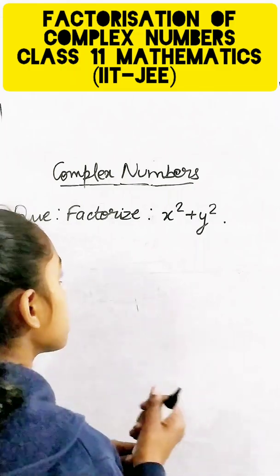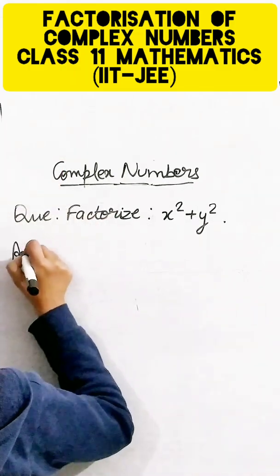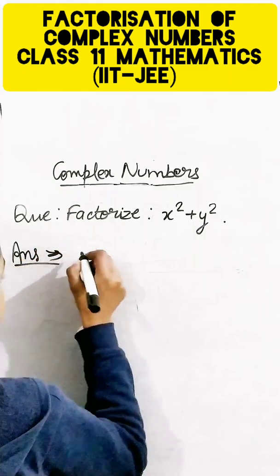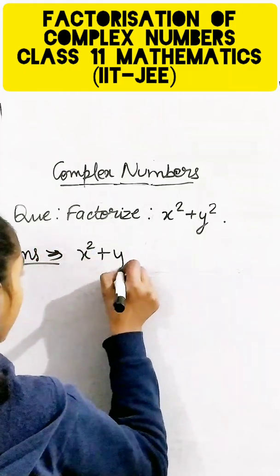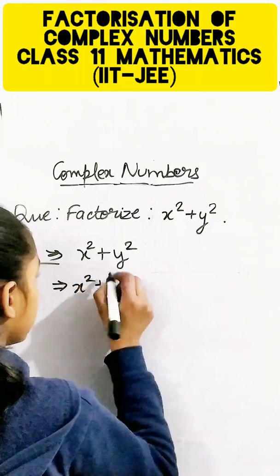We're going to factorize it using complex numbers. So we have to factorize x² + y², which is going to be x² plus...